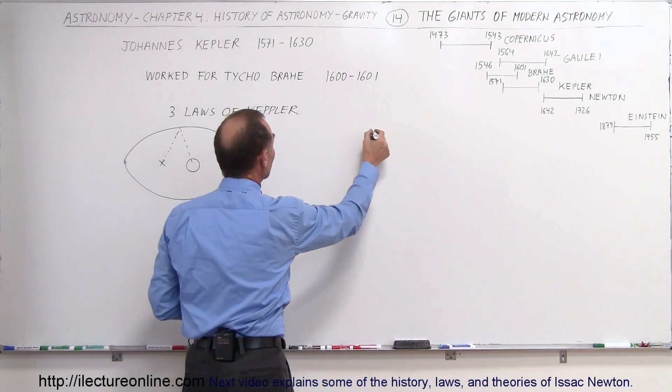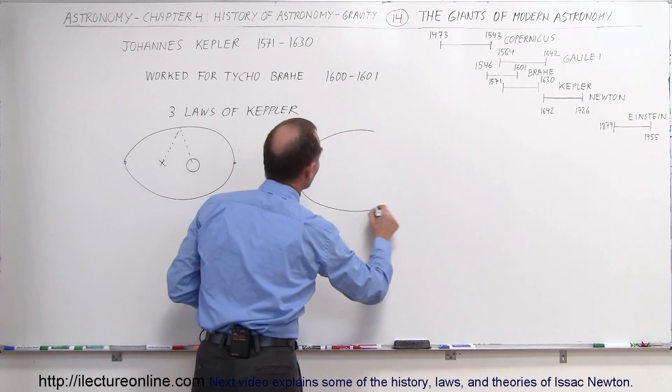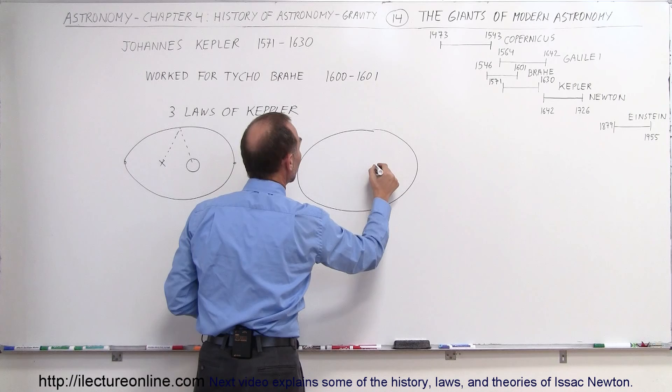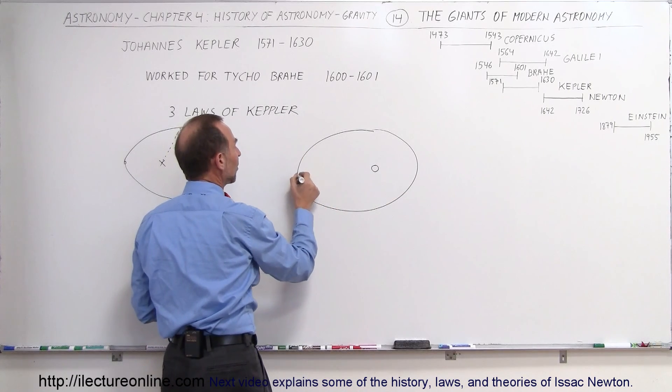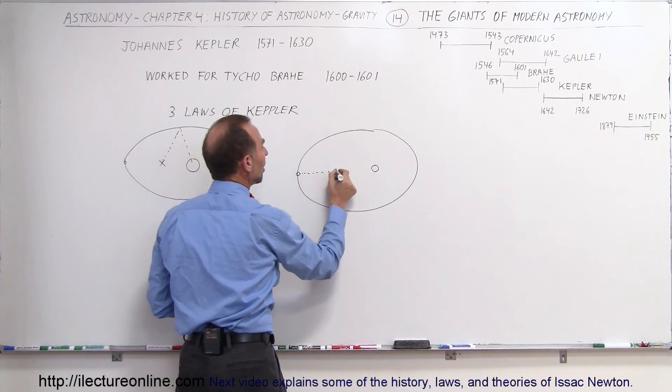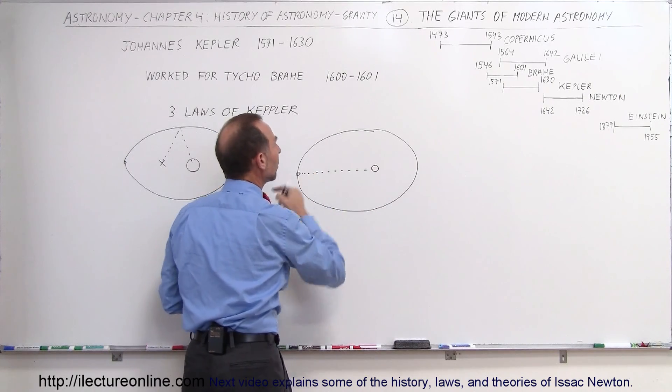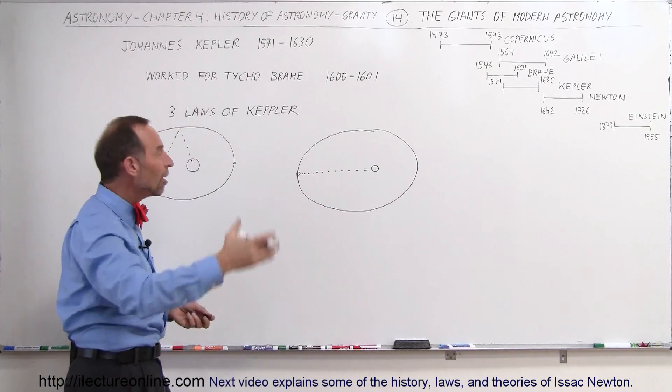Not only that, when he did careful measurements, he realized that if he took an imaginary rope, for example, let's say here's the planet. And let's say you have an imaginary rope connecting the Sun to the planet. And as the planet revolved around the Sun,